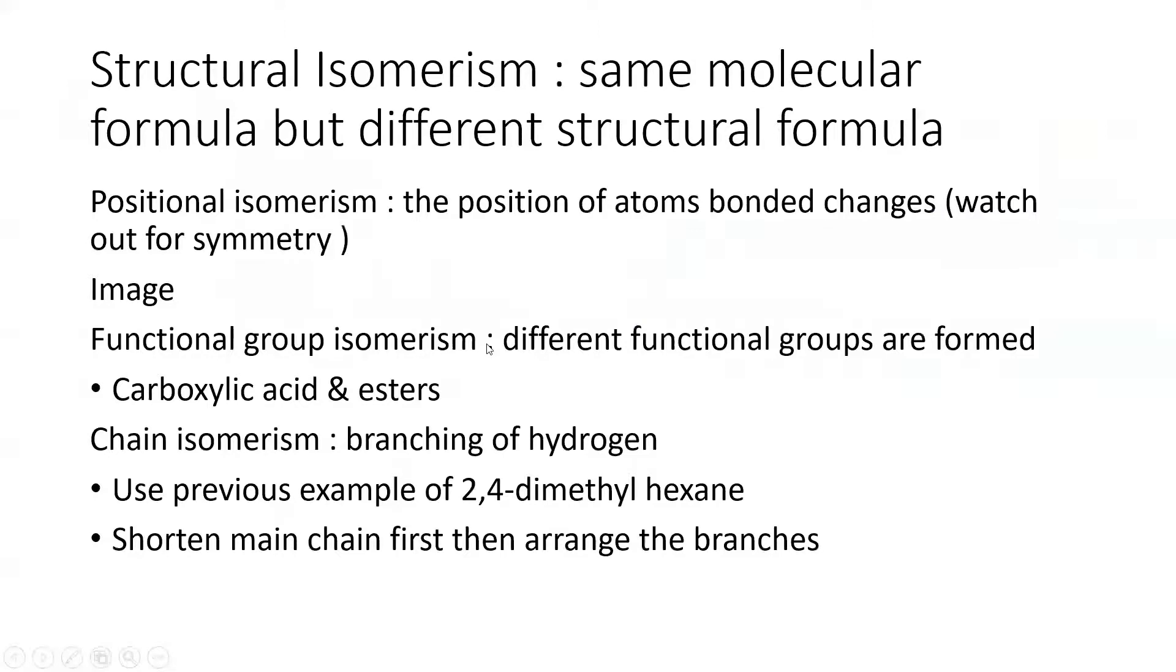Next up, we have functional group isomers. Basically, different functional groups are formed with the same molecular formula. One example is carboxylic acids and esters. It can also be carboxylic acids and ketones and alcohols. Carboxylic acids broken up into aldehydes and alcohols. So you just need to look out for that. But usually when they test in exams, it's a carboxylic acid and ester, a functional group isomerism.